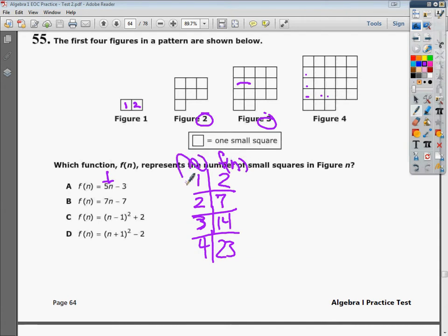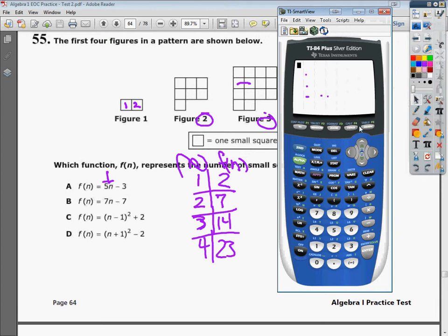So I'm looking to try five times one minus three and I'm hopeful that I'm getting a two. Which, of course, incidentally enough, it does.